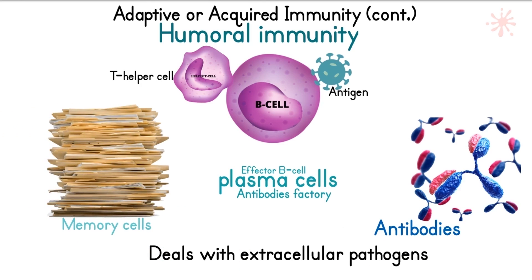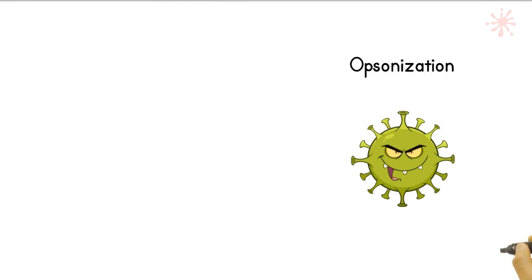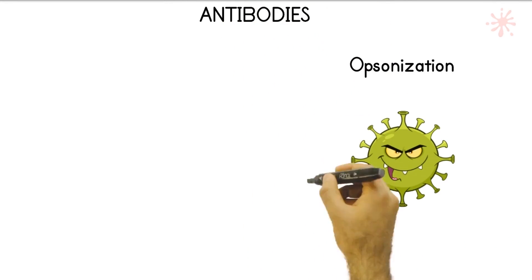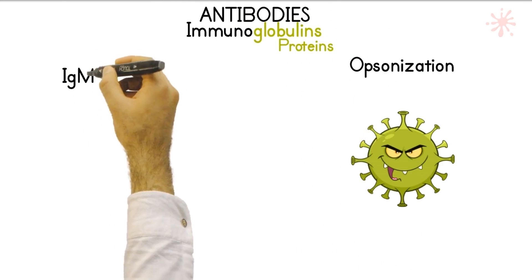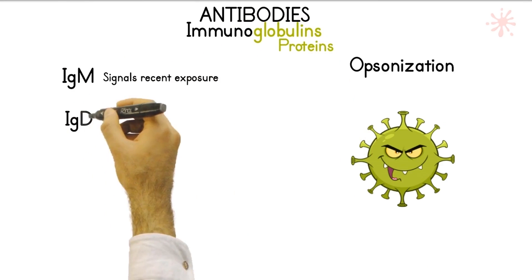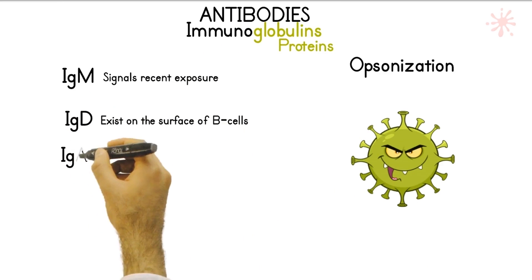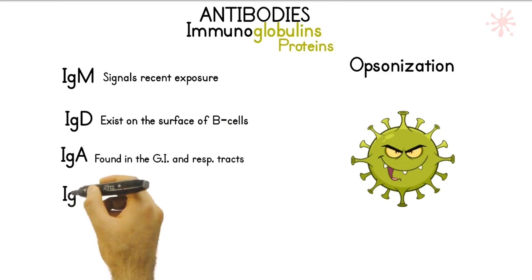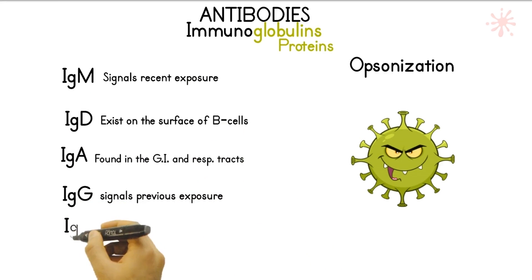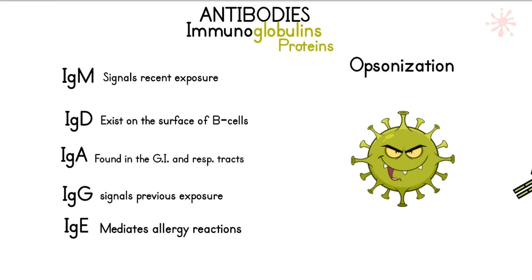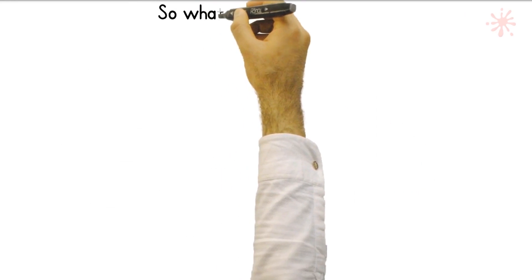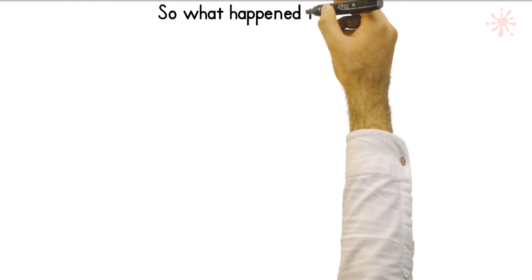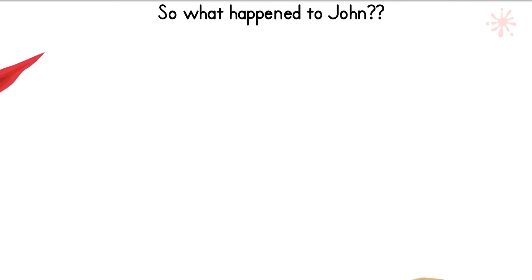Activated B cells give rise to memory cells that store information about pathogens for following exposures. Antibodies are soluble proteins with several classes, each having a different specialty. They float around, bind to specific pathogens, and tag them — like a GPS signal — pending for a phagocyte to come and destroy it. This marking process is called opsonization. In some cases, antibodies can destroy the germ on their own.